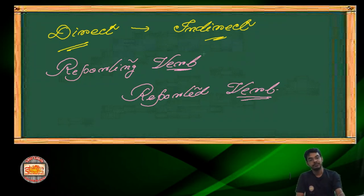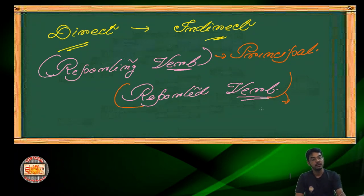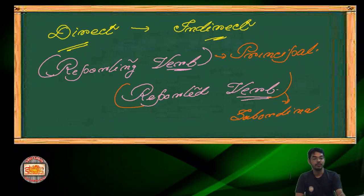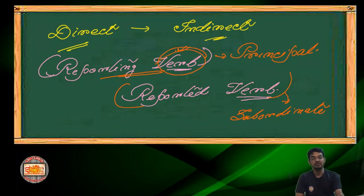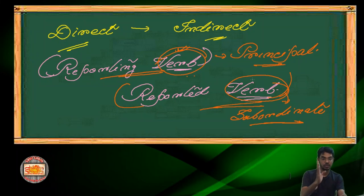Reporting verb — it comes in which clause? Reporting verbs always come in the principal clause, whereas the reported verb comes in the subordinate clause. For principal clauses, we use the reporting verb, and the tense that this reporting verb gets actually detects the tense of the reported verb — that is the tense of the subordinate clause. So the reporting verb is in the principal clause, which detects the tense of the subordinate clause, that is the reported verb.